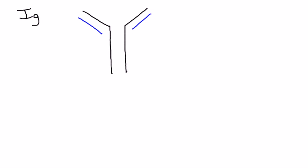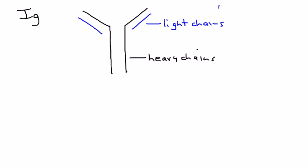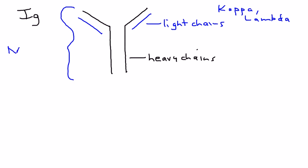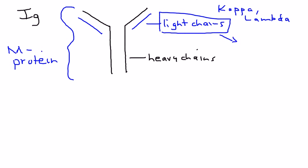The immunoglobulin structure is important to understand. Essentially, there are two heavy chains and two light chains — the heavy chains are the large ones, and the light chains come in two types: kappa and lambda. This whole molecule is referred to as an M-protein. But if you find these light chains just by themselves, they are given a special name: Bence-Jones protein.